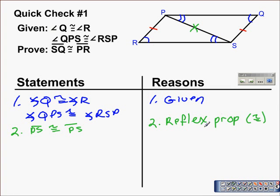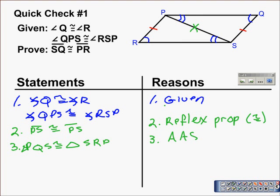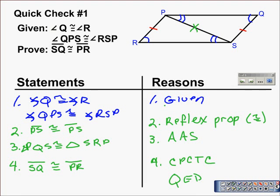That's enough to establish that triangle PQS is congruent to triangle SRP, and this time it's by Angle-Angle-Side, because it's not the included side. Now that the triangles are congruent, we can establish that segment SQ is congruent to segment PR, and that's because of corresponding parts of congruent triangles are congruent — CPCTC.